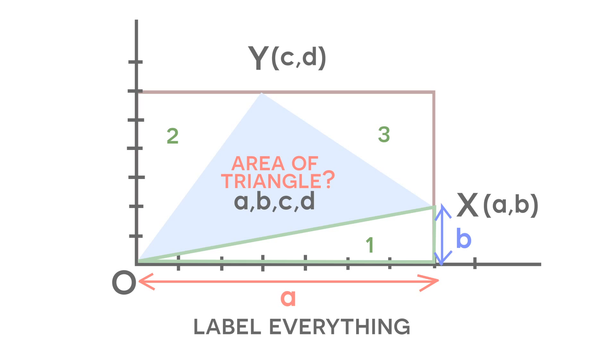Now let's look at triangle number 2. Well, from the coordinates C,D, the base of this triangle is going to have a distance of D, and the height of this triangle is going to have a distance of C.